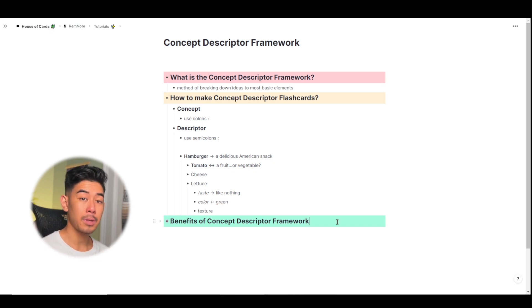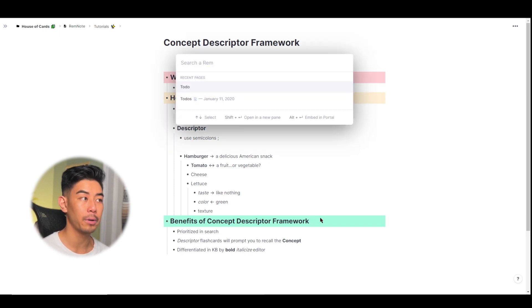Now I'm going to talk about some of the benefits of using the concept descriptor framework in RemNote. First is that concepts are prioritized in the RemNote search. Whenever you search through your database using ctrl plus p to open a document or ctrl plus s to open a portal, anything you type in, concepts will be prioritized and shown at the top.